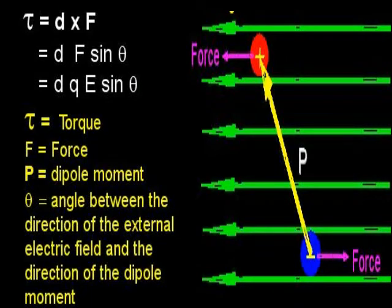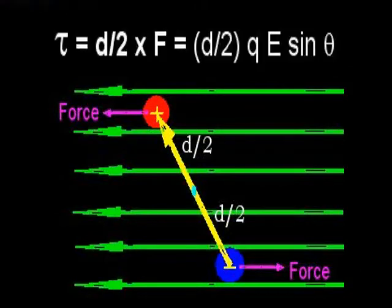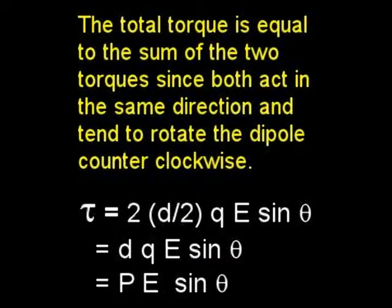This can be written in terms of the electric field as d times qE sin theta. Theta is the angle between the direction of the external field and the direction of the dipole moment. If the axis of rotation is chosen to be the center of the dipole, then the torque because of each charge becomes d over 2 cross F. Since the torque due to the other force is the same and acts in the same direction, then the total torque acting on the dipole becomes tau equals PE sin theta.